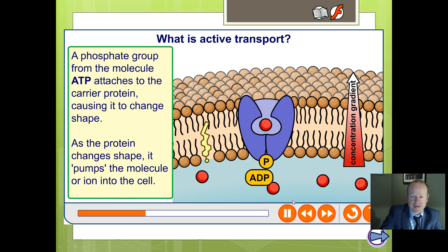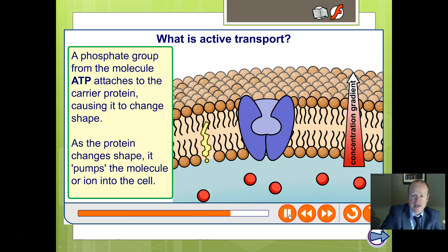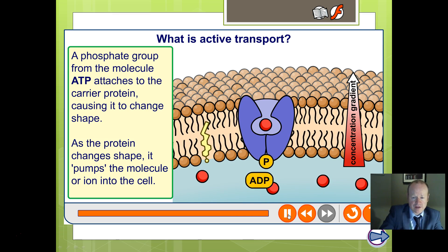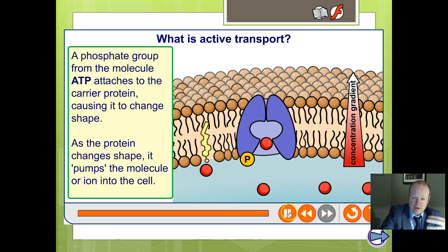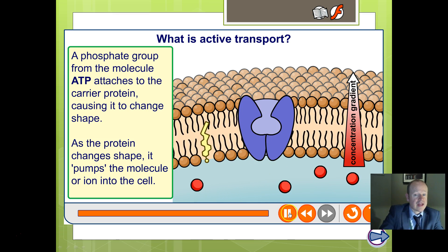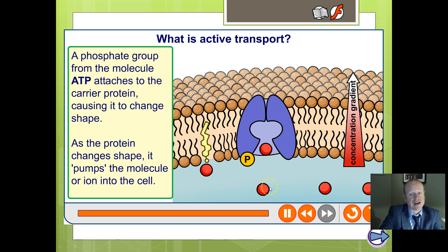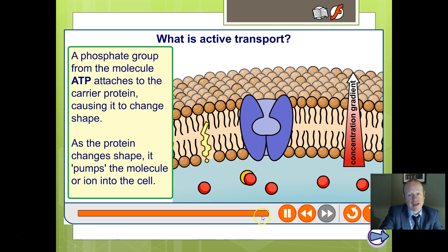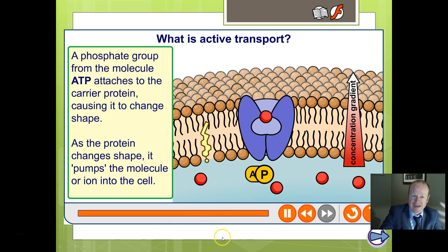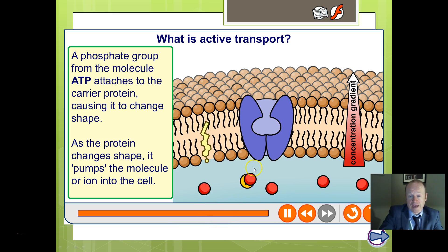To summarise: ATP splits into ADP and inorganic phosphate; the phosphate sticks to the carrier protein; and it is the binding of that phosphate that makes the shape change. Once the shape has changed, it brings the molecule in. Once the molecule is inside, the carrier protein changes back to its original shape, so it can be used again and again to constantly bring in more of the molecule we're trying to concentrate inside the cell. Active transport works against the concentration gradient and requires energy from ATP.